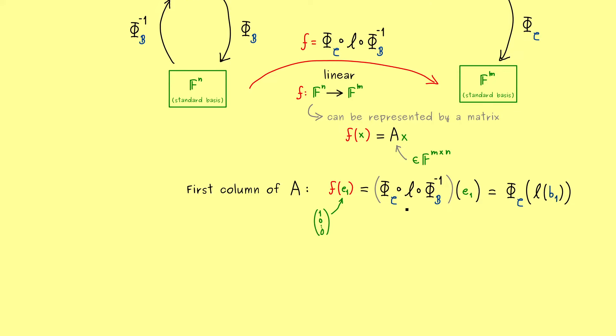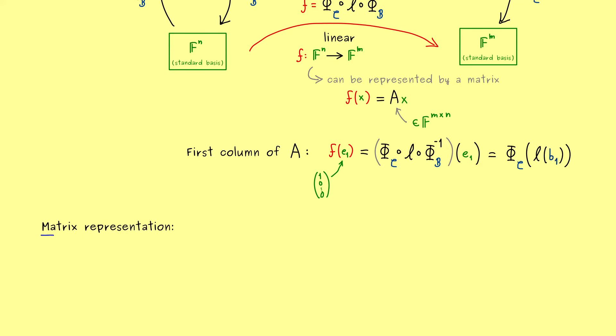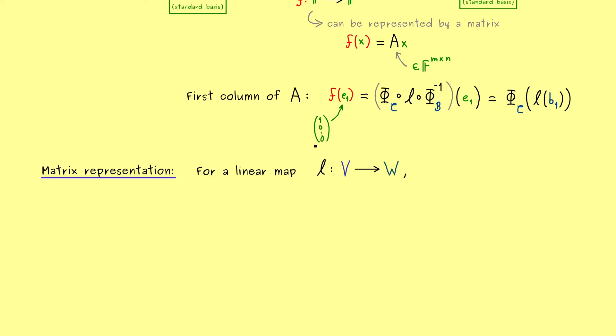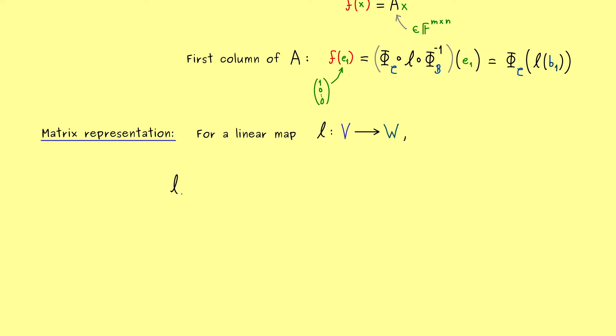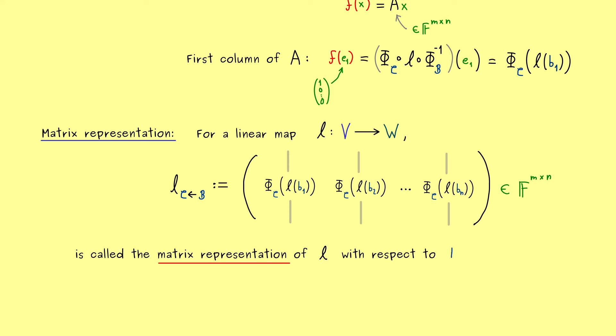And now it's also clear how we get the other columns of A. We just put in the basis elements into the map L, and then we look at the images and represent them with respect to the basis C. Hence, what we get is indeed our matrix representation of the linear map. So let's put this into a formal definition. So for any linear map L between V and W, we can find an M times N matrix which represents this map. And since the crucial ingredient here is given by the two bases, we put them into the index of L.